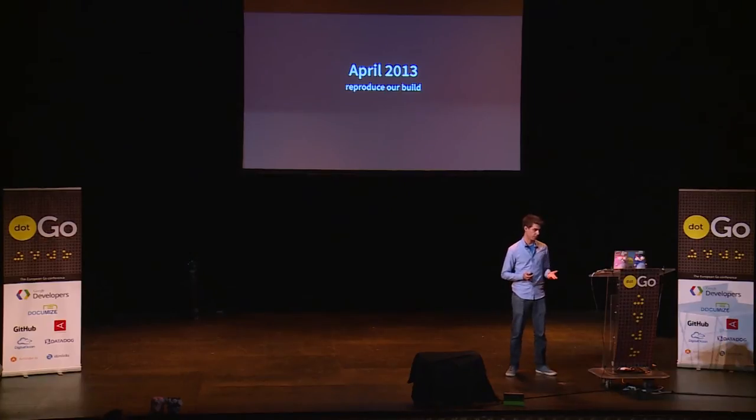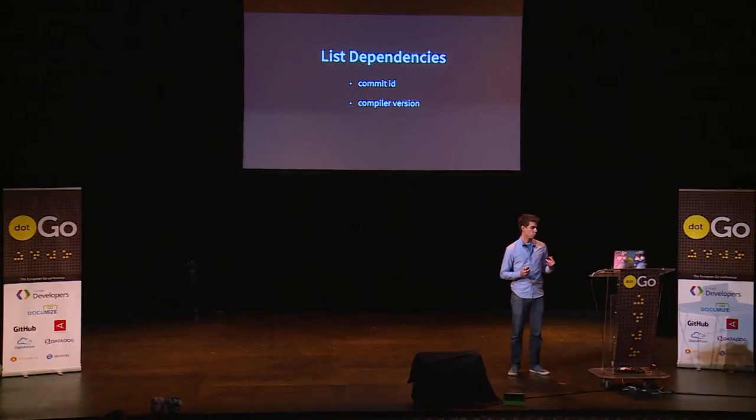GoDep began in April of last year and it was super basic. The idea was we're building an executable written in Go and we want to be able to consistently reproduce the same build. So what did GoDep do? It writes down a list of all the dependencies, including the Go compiler version and the exact commit ID of each one that we used to build and test the software, so that later we can use that list to recreate the same build.